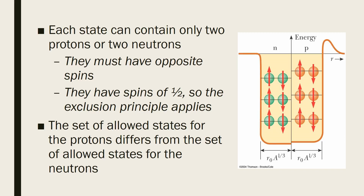Just as in any orbital there are only two electrons — one with +½ spin and one with −½ spin — in the nuclear shell model it is assumed that nucleons exist in a potential well. As shown in the diagram, each state is occupied by one +½ spin and one −½ spin nucleon, so Pauli's exclusion principle applies. There is also an energy difference between the allowed states of protons and neutrons.